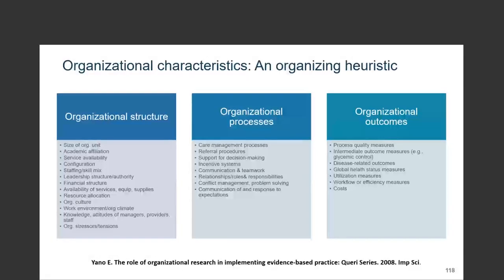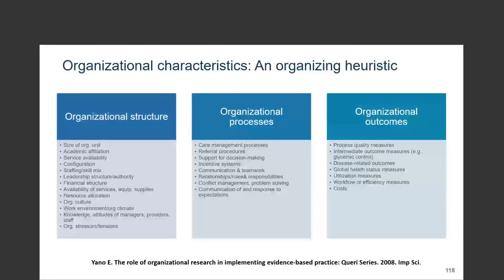On this slide is one great framework for thinking about these kinds of different variables, developed by Elizabeth Yano and her team at the VA — likely very familiar to many folks in the room. It outlines and provides a nice heuristic for thinking about some of these organizational structure variables — things we've talked about today like size, academic affiliation, configuration, leadership structure and authority — and differentiating those from organizational process variables like care management processes, referral procedures, communication and teamwork processes.